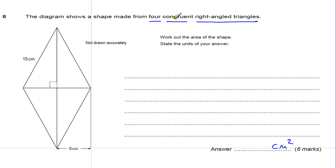Okay, four congruent meaning the same. So four triangles that are the same and they are right angle triangles. So if we work out the area of one of these triangles, then we can times it by four to get the area of the whole shape.